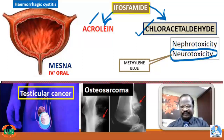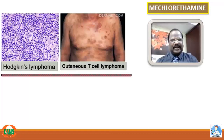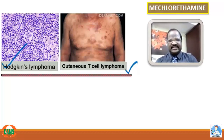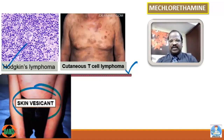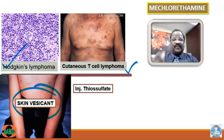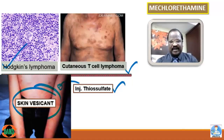Mechlorethamine is an important alkylating agent useful for treatment of Hodgkin's lymphoma and cutaneous T-cell lymphoma. The most important MCQ: mechlorethamine causes skin vesication — an alkylating agent most commonly causing skin vesication. To treat vesication caused by mechlorethamine, we can inject thiosulphate at the site of leakage.